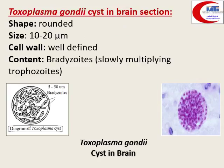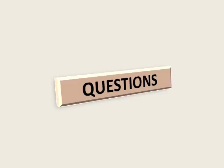The second slide is Toxoplasma gondii assessed in a brain section. If we take a biopsy from the brain and examine it under the microscope, we find the brain cyst. It is about 10 micrometers, rounded in shape, with a well-developed cell wall and bradyzoites — the slowly multiplying trophozoites — inside.